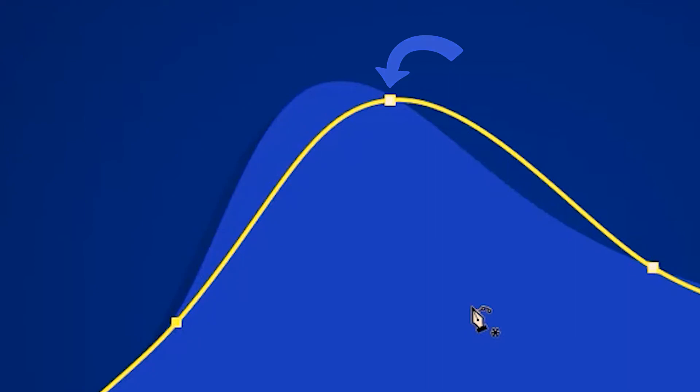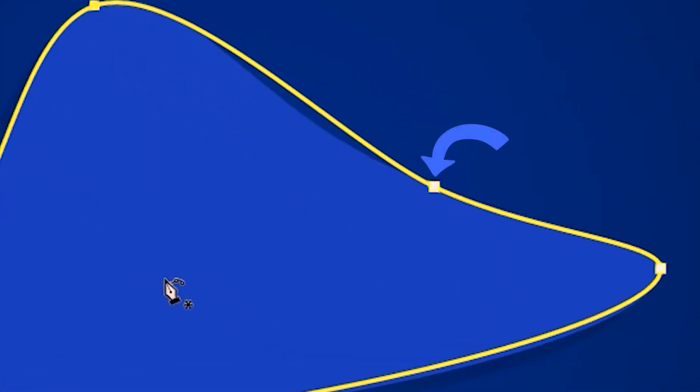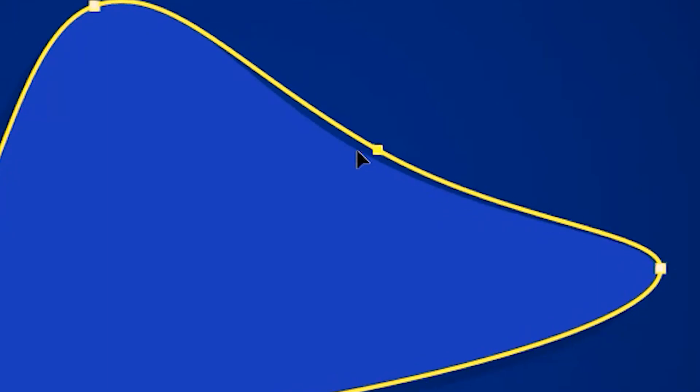Next, let's move this anchor. We'll simply click and drag with the curvature pen tool. Do the same for this one. Click and drag. And it's looking pretty decent.